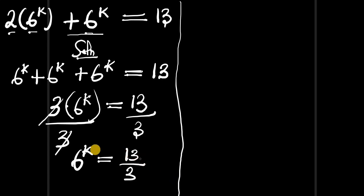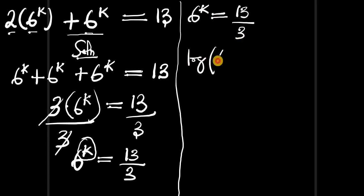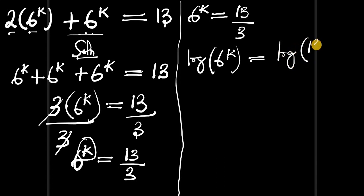At this point we are looking for the value of k. So if we have 6^k equals 13/3, we can introduce the logarithm: log of 6^k equals log of 13 divided by 3.